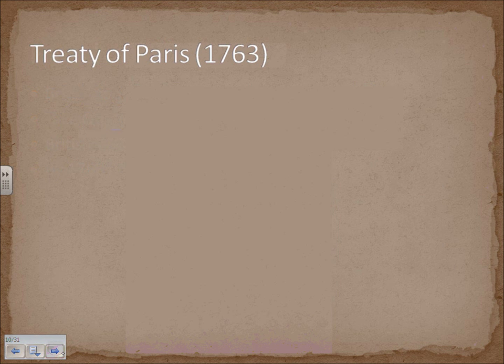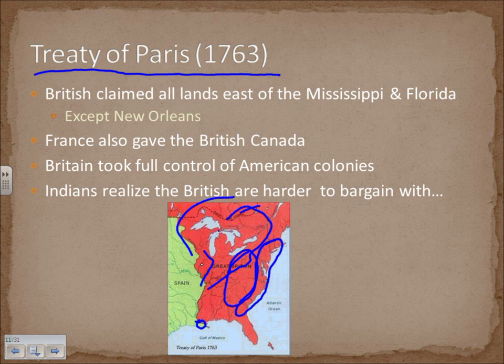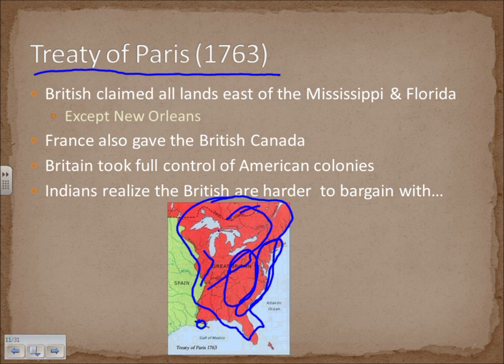The war concluded in 1763 with the Treaty of Paris. Britain claimed all lands east of the Mississippi and Florida, except for New Orleans, which the French were allowed to keep. Britain's territory expanded enormously from the coastal region to include all of this new land. The Indians quickly realized that the British were harder to deal with, especially since many had allied with the French during the war.